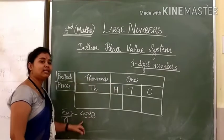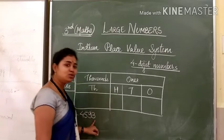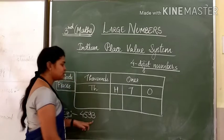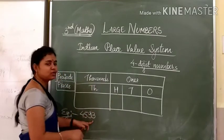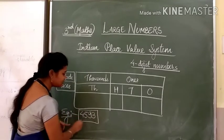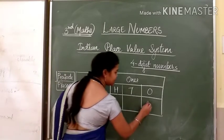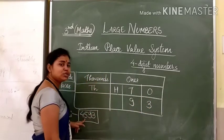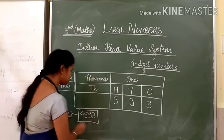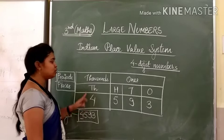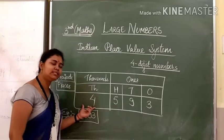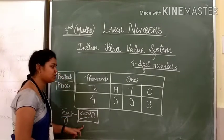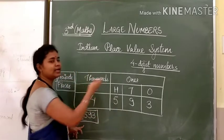For example, we are taking the number 4, 5, 9, 3. How to write this number in the place value chart — this I am going to tell you today. According to the place value chart, you have to put this number from the right side. So first we will write 3 in the 1s place, 9 in the 10s place, 5 in the 100s place, and 4 in the 1000s place.